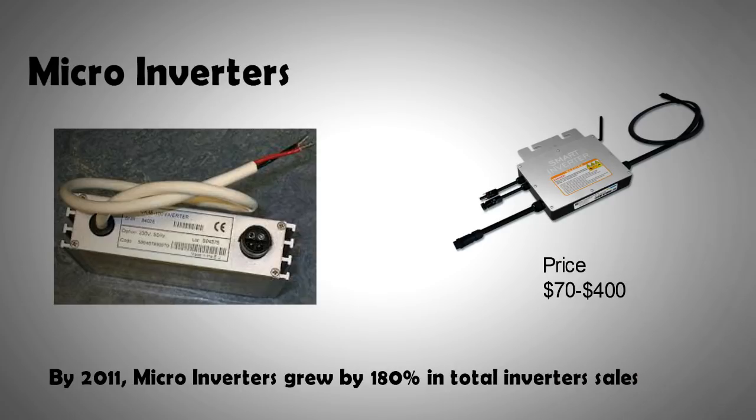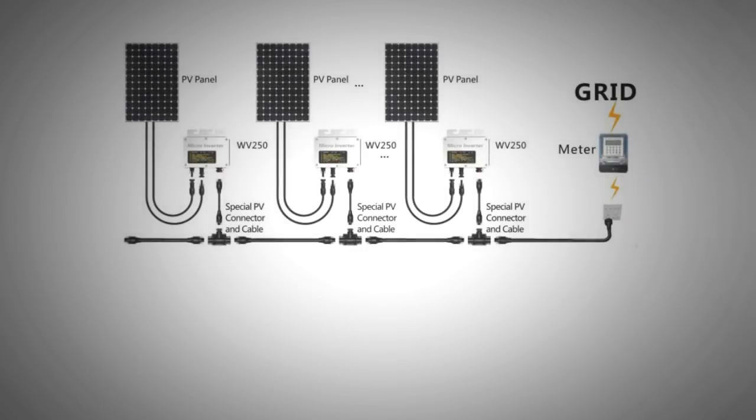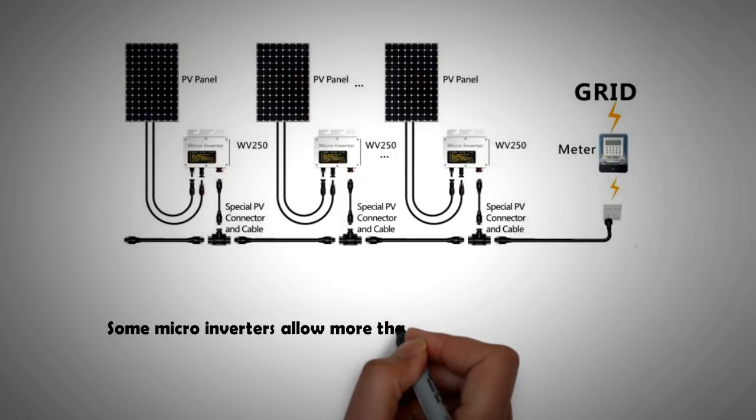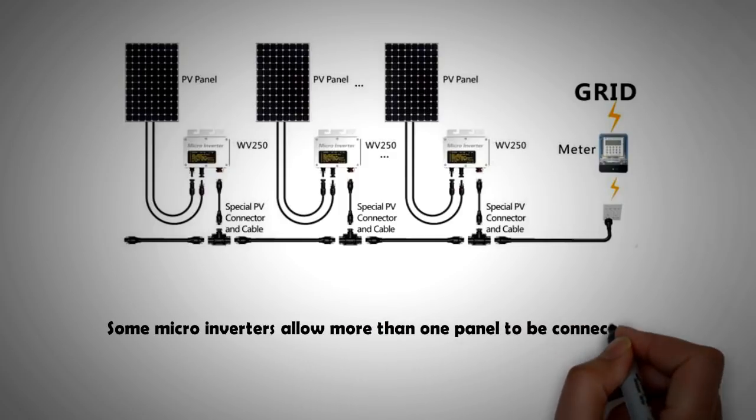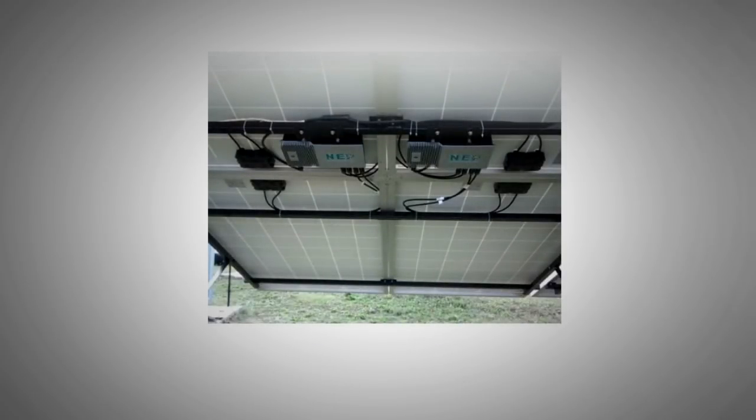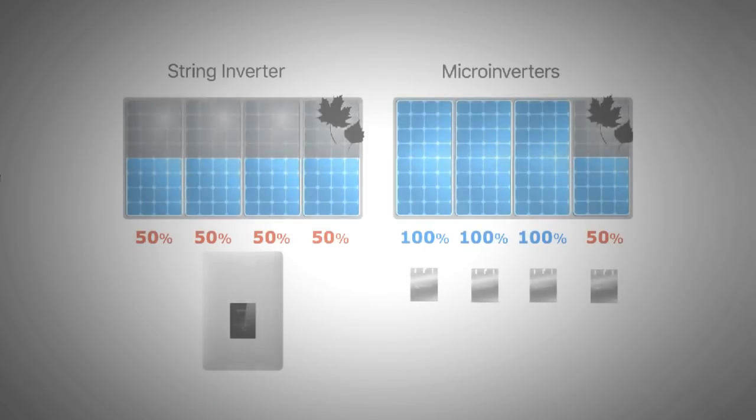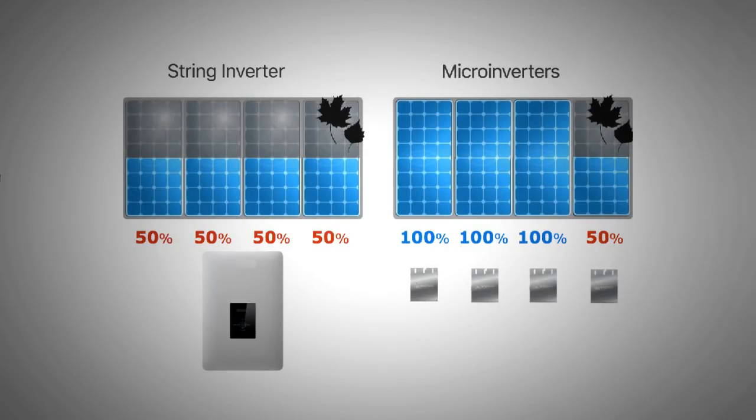Instead of a centralized inverter that looked after a whole string or a couple of strings of panels, the micro-inverters took the power management down to a single panel and directly fed its power to the grid. So every panel in the system has its own micro-inverter. This meant better power management and throughput, particularly in the case of partial or complete shading. One has to remember that with a string inverter, a single partially shaded panel can bring down the power level of the whole string of panels.